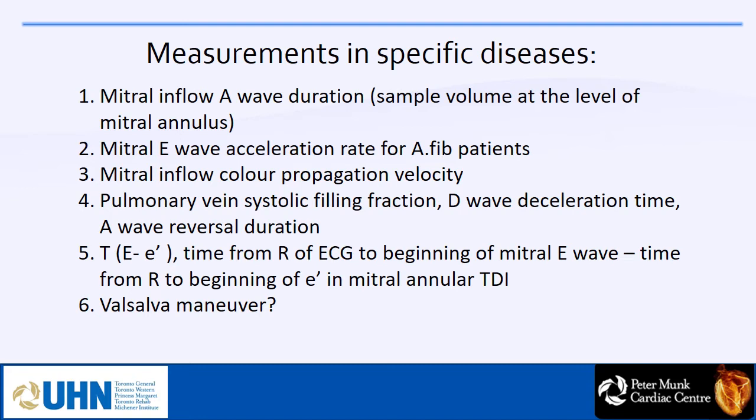The second group of measurements are for specific diseases such as mitral stenosis, mitral regurgitation, and atrial fibrillation — not done in every patient. These include mitral inflow A-wave duration, mitral E-wave acceleration rate (very important in atrial fibrillation), mitral inflow color propagation velocity, pulmonary vein systolic filling fraction, D-wave deceleration time, A-wave reversal duration, and time to E-wave versus time to E' — useful in MS and MR patients. Valsalva maneuver can be done transthoracically but not by TEE.